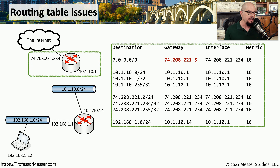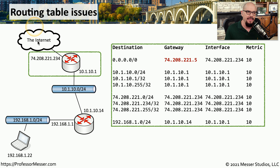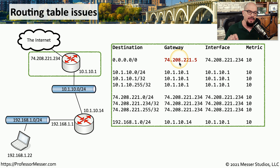For example, if you looked at a routing table and saw the default route 0.0.0.0/0 had a next hop gateway of 74.208.221.5, based on our map we may not know what that IP address is because we're not in charge of the ISP's routers. If we're having problems communicating out to the internet, we may want to contact the ISP to confirm that the gateway is configured properly in our routing table. If it isn't, we'll need to change the default route to point to the proper gateway at the ISP.